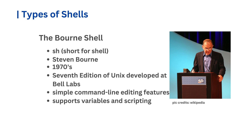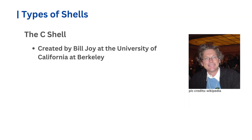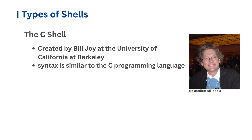For many years, the Bourne shell was the only option for interacting with Unix systems. Eventually, other shells like the C shell, CSH, were developed as alternatives. The C shell was created by Bill Joy at the University of California at Berkeley, and was named because its syntax is similar to the C programming language, according to the official documentation.